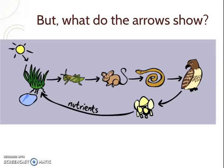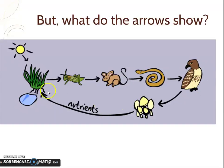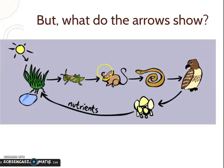Okay, so the arrows are huge — tons of people have trouble with this. The arrows show the flow of energy and nutrients in a food chain or web. The grass gives its nutrients to the grasshopper, the grasshopper gives its energy and nutrients to the mouse, which gives its energy and nutrients to the snake, to the owl, and so on.